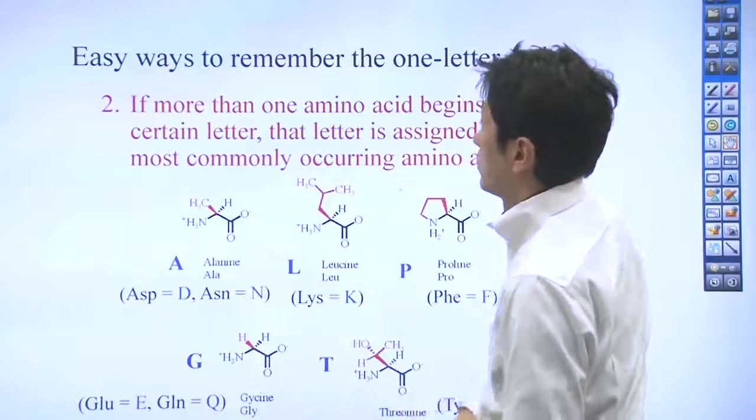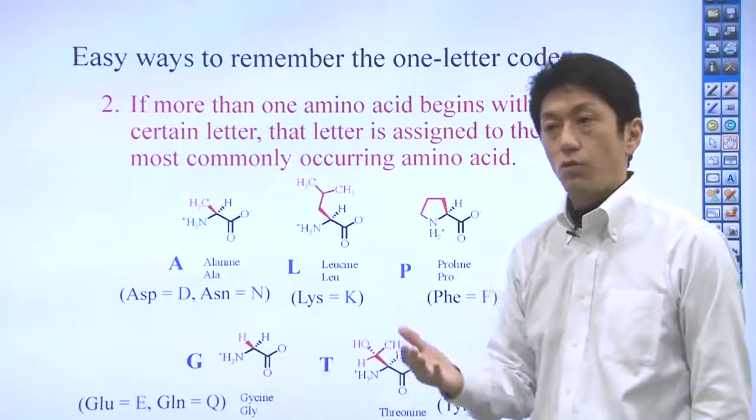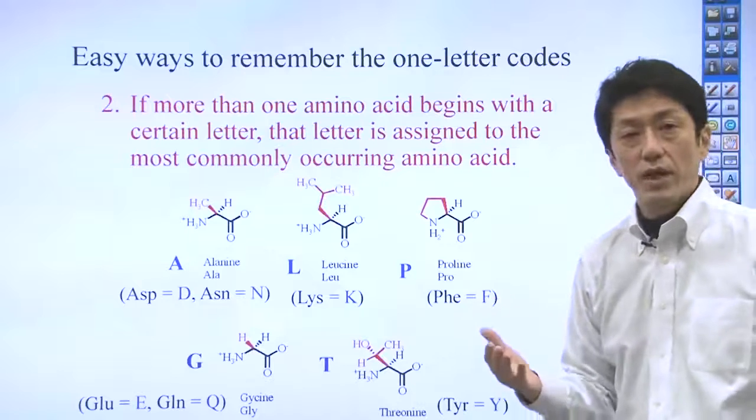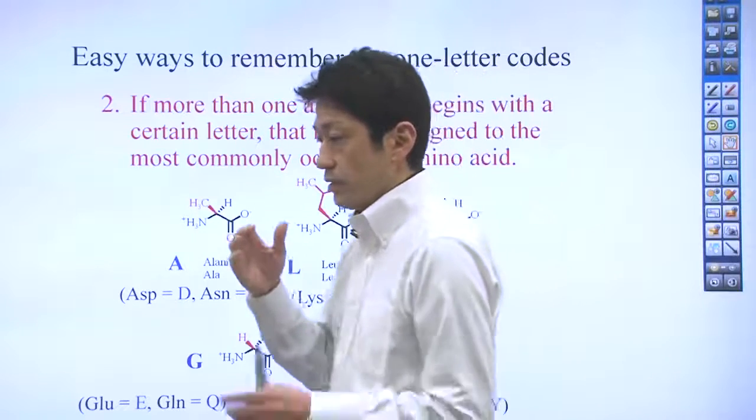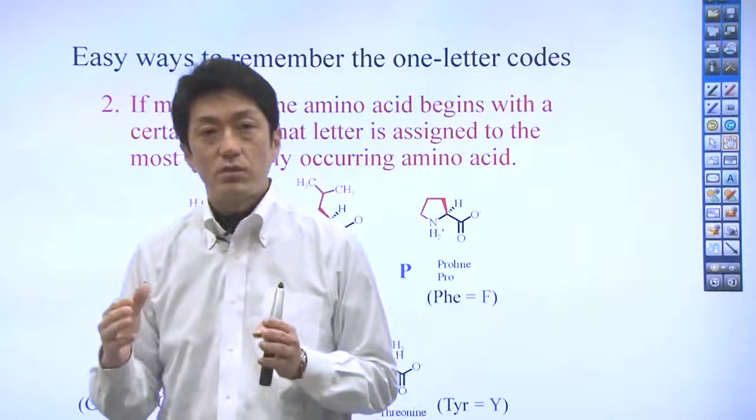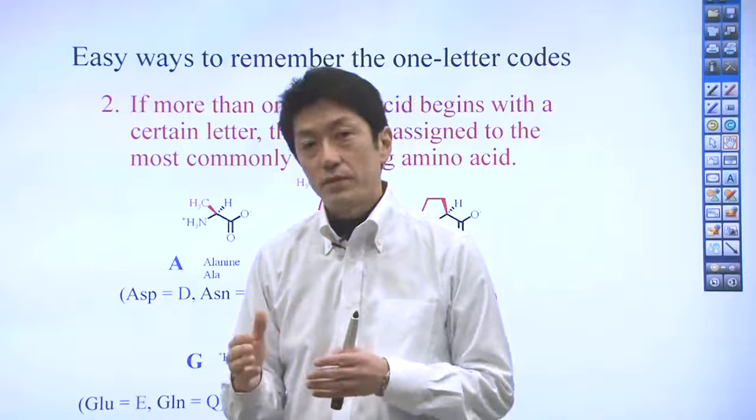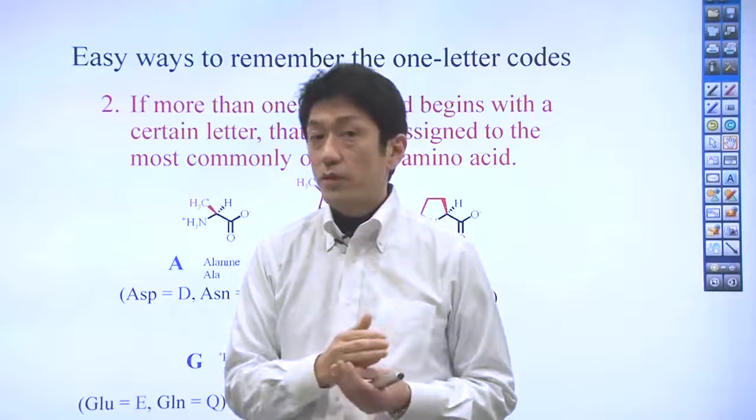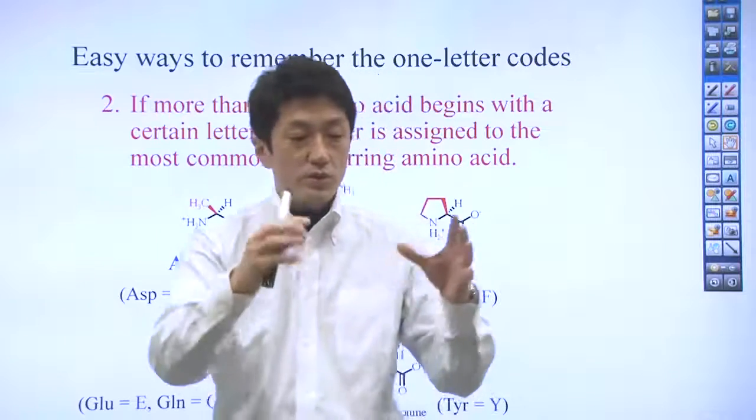The point is, what amino acids are commonly occurring amino acids? I would say the smaller amino acids tend to be more abundant, or simple amino acids tend to be more abundant, or hydrophobic amino acids may be more abundant.